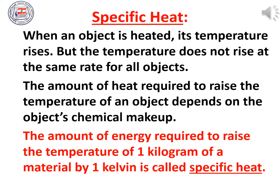We also have something called specific heat. When an object is heated, its temperature rises, but the temperature does not rise at the same rate for all objects — this depends on the object's chemical makeup. The amount of energy required to raise the temperature of one kilogram of a material by one kelvin is called specific heat, and it is specific to each material.